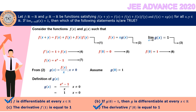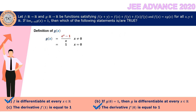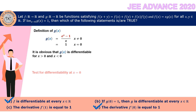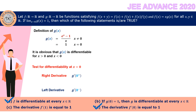We need to test the differentiability of g(x). For x ≠ 0, the function (e^x - 1)/x is always differentiable. The only potential issue is at x = 0, so we compute the right derivative g'(0⁺) and left derivative g'(0⁻) using the basic definition.